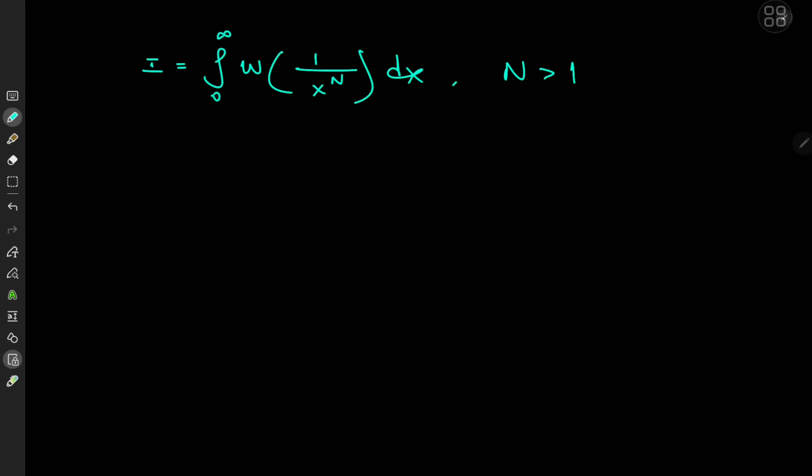Mike Gavonen folks. Today we have yet another fascinating integral and this one's kind of strange — strange because we're integrating from zero to infinity the Lambert W function evaluated at 1 over x to the n, dx, where n is supposed to be greater than 1. I haven't invoked the Lambert W function quite a lot on the channel, so this is going to be interesting.